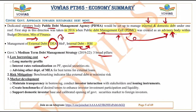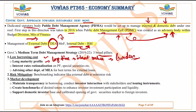Under low borrowing cost, the first key element is a long maturity profile of the debt portfolio — meaning the government can take a long time to return the money. When the government has a longer repayment period, the interest rate will be low and the burden to return the money in the near future will also reduce. The second element is interest rate rationalization on government securities and small savings schemes, which helps reduce the interest rates at which the government borrows — taking loans at the best interest rate.